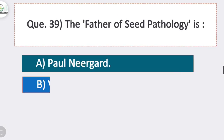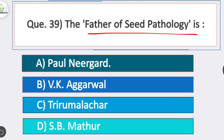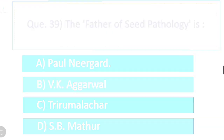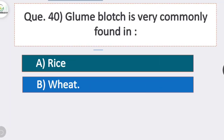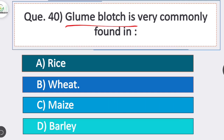Question 39: the father of seed pathology is? Option A is correct — Paul Neergaard. The father of seed pathology is Paul Neergaard. Question 40: glume blotch is very commonly found in which crop? Option B is correct — wheat. Glume blotch is very commonly found in wheat.